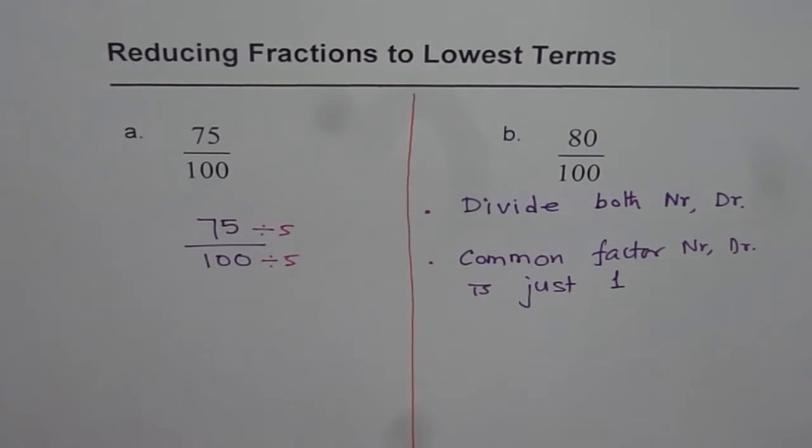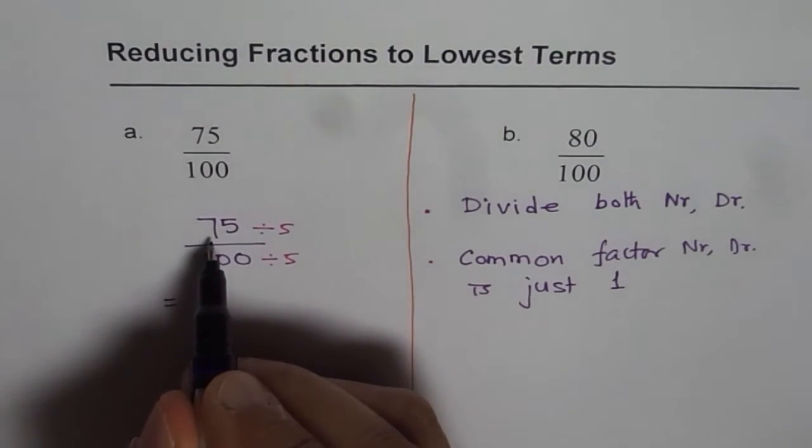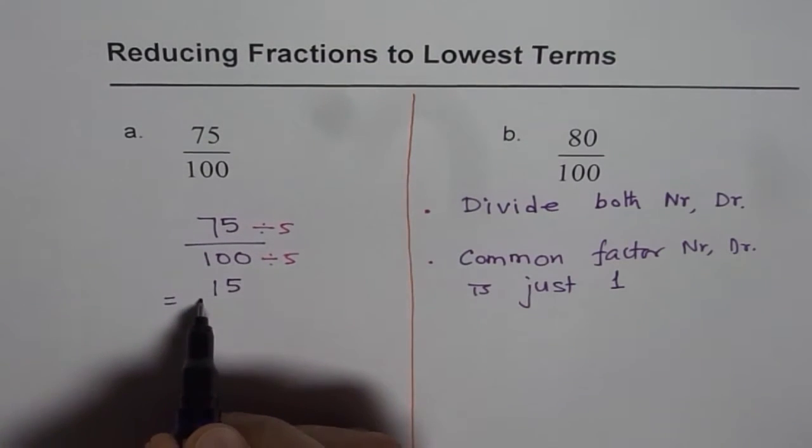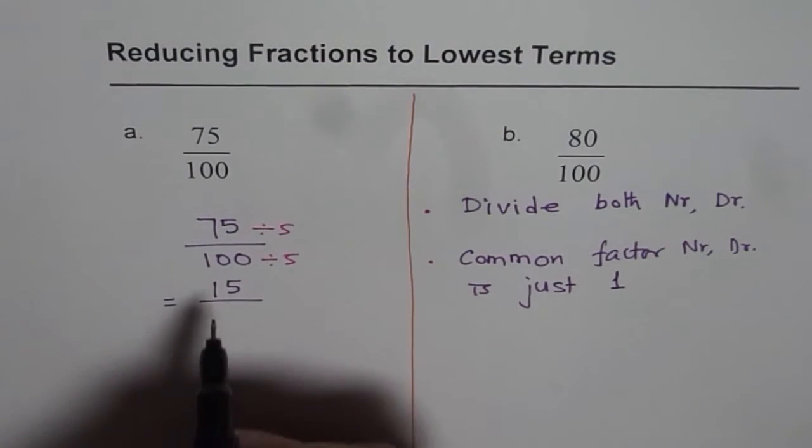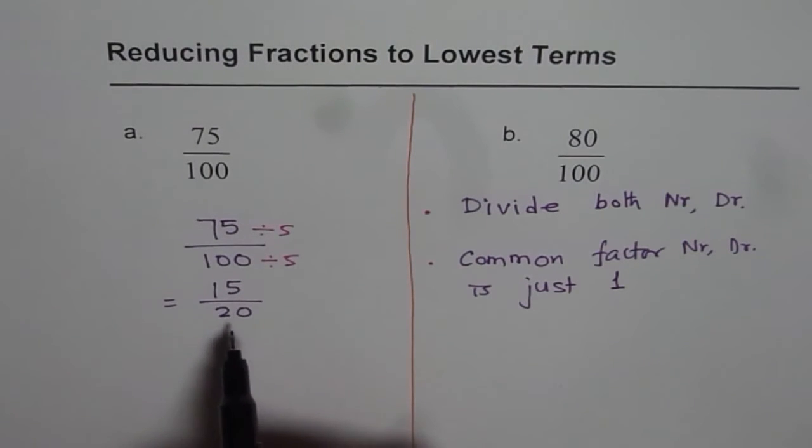In that case, what do you get? You get 75 divided by 5. 5 goes one time, 25. That means you get 15 and here 5 goes two times, so you get 20. Now, you get 15 over 20.